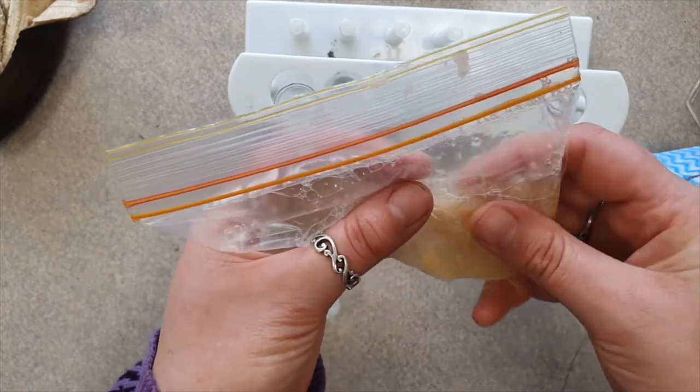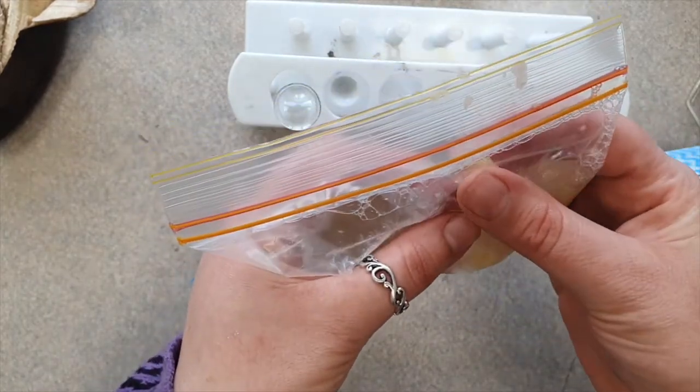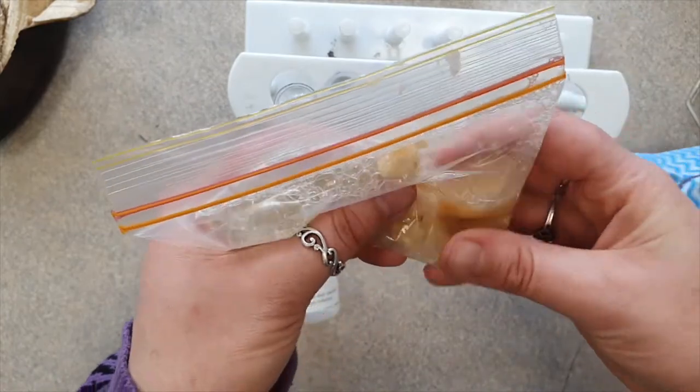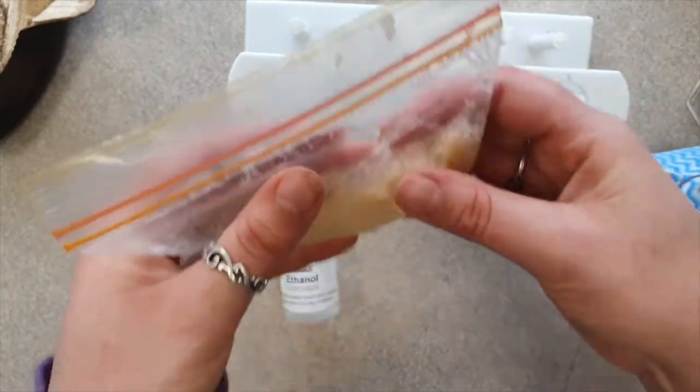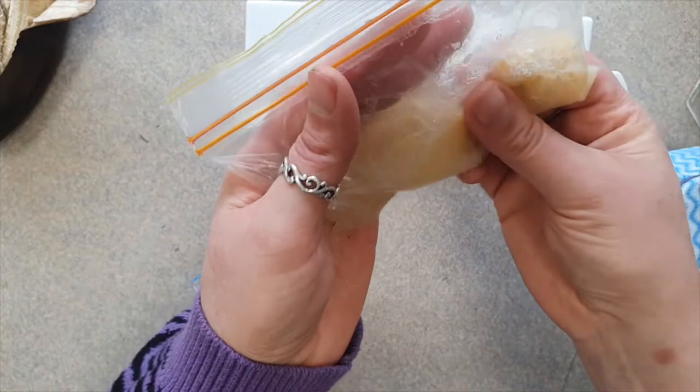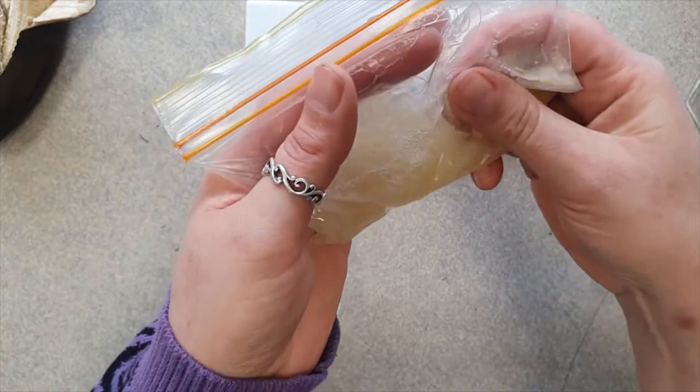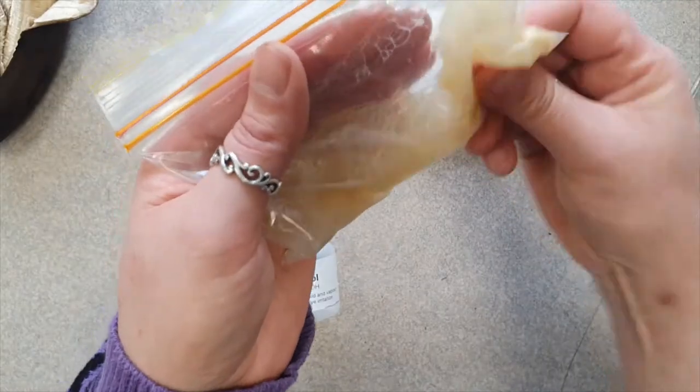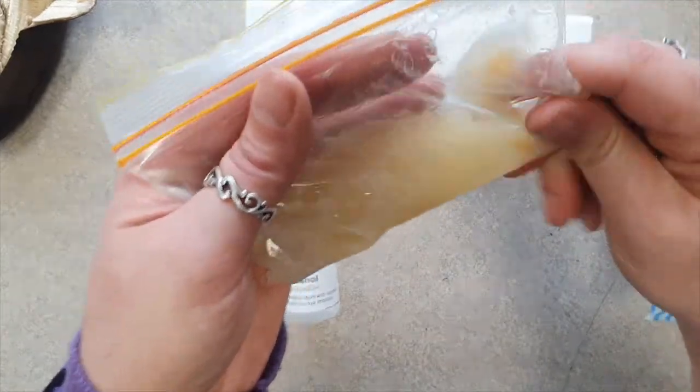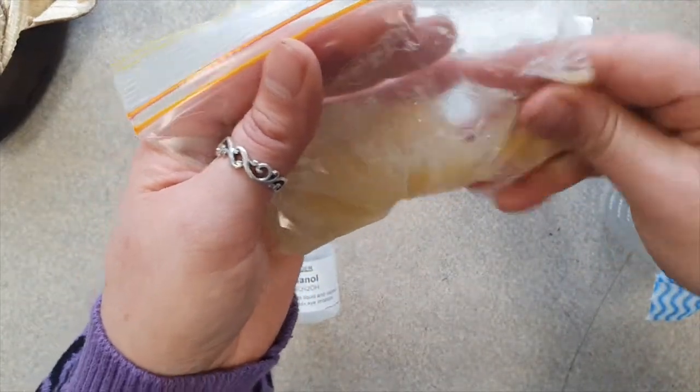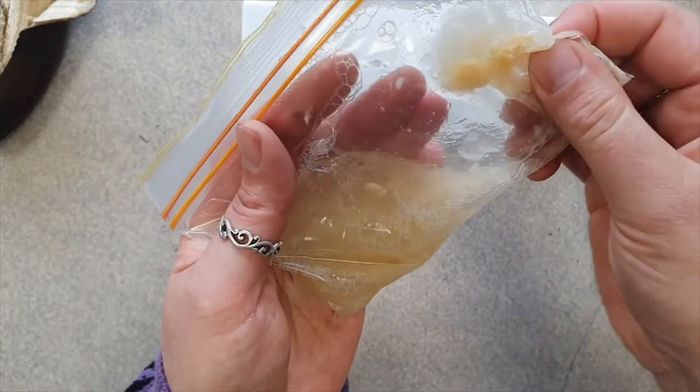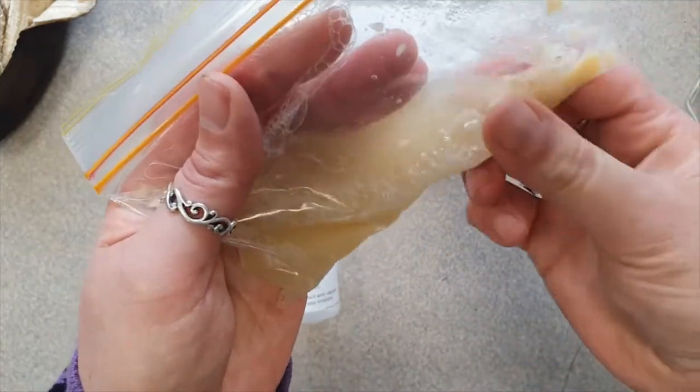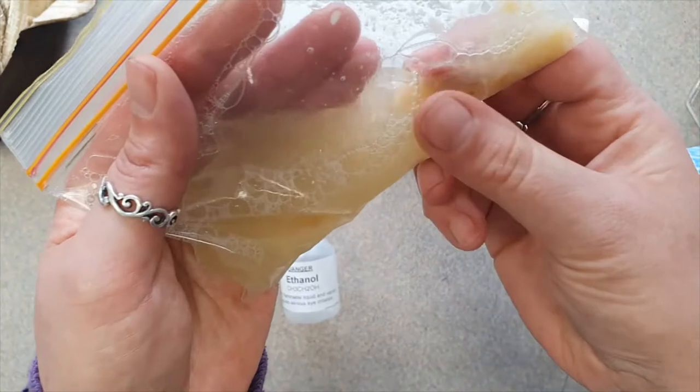Now the reason why the DNA solution has soap in it is because when you think about what dishwashing liquid does, like if you're washing an oily pan, it breaks up oil. The soap does. It breaks up oil and fat, and the membrane of all cells is made up of lipids, which is another word for fats.